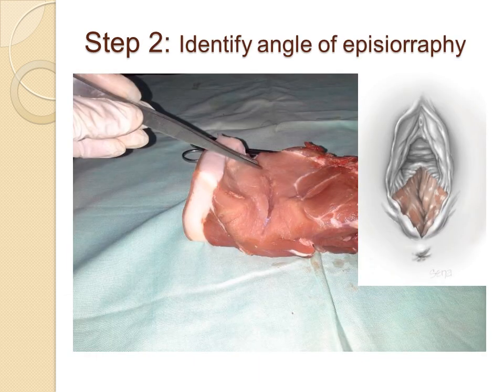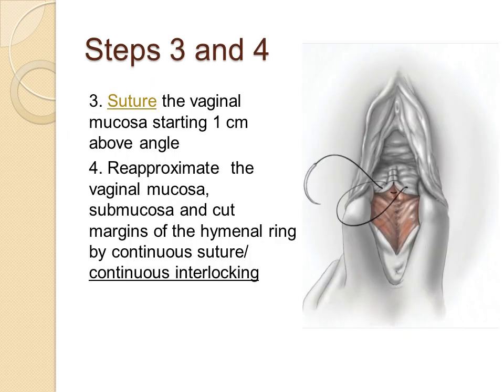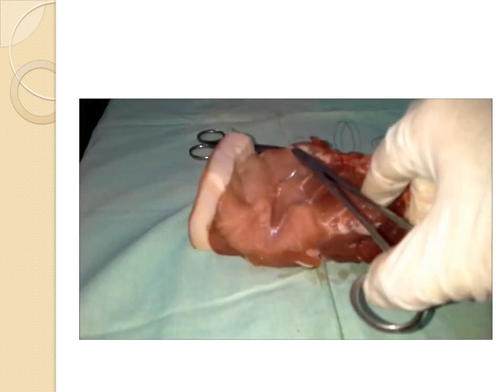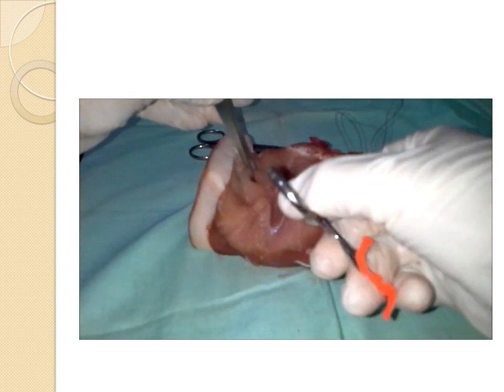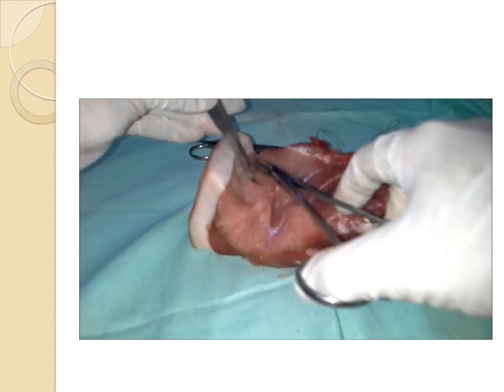Step 2: identify the angle of episiotomy. Step 3: suture the vaginal mucosa starting 1 cm above the angle. Step 4 is to re-approximate the vaginal mucosa, sub-mucosa, and cut margins of the hymenal ring by continuous suture or continuous interlocking sutures. Here is a video showing you steps 3 and 4.